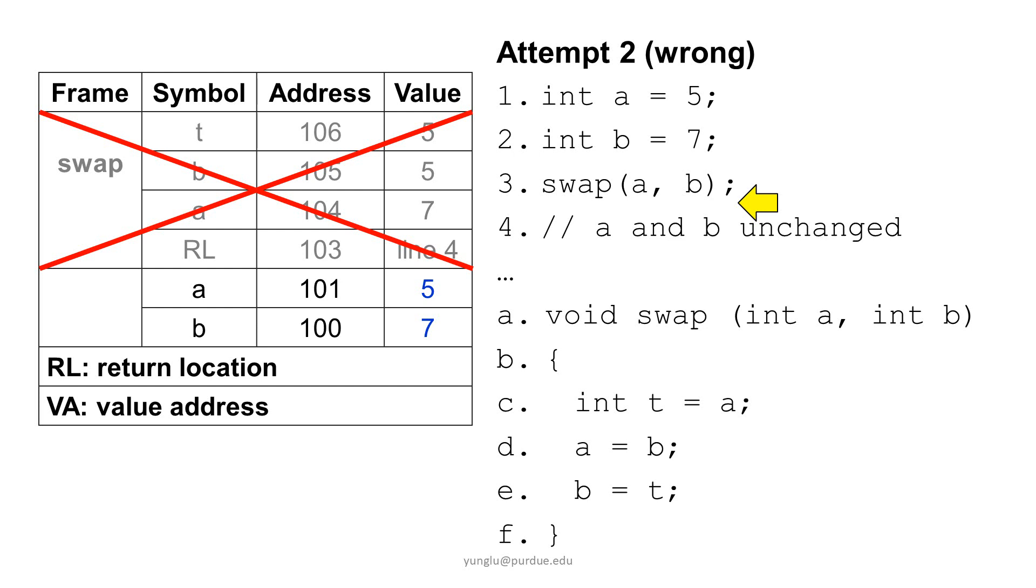What is happening? Why? Remember that the a in the swap function is not the same a in line 1. They occupy different memory addresses. To think of this in a different way, we can rename a and b in the swap function to x and y. The swap function is exactly the same.